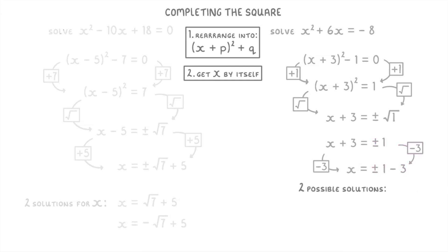So again, we have two possible solutions. Either x equals positive 1 minus 3, which means x equals negative 2, or x equals negative 1 minus 4.